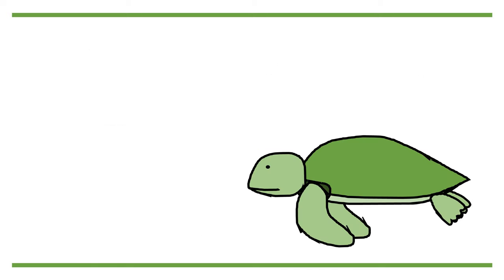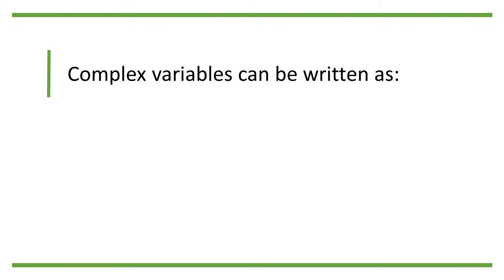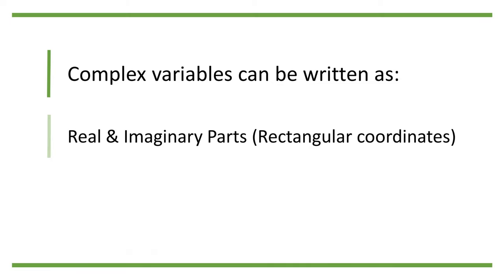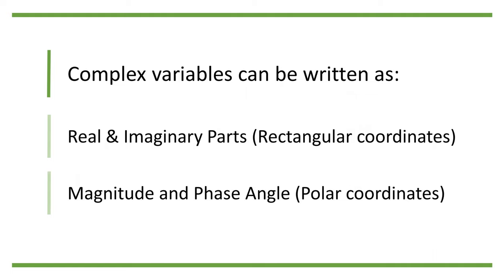We also need to remember that S and V are complex variables, and a complex variable contains two parts of information. In rectangular coordinates, the information is stored in the real and imaginary parts of the variable. In polar coordinates, it is stored in the magnitude and phase angle of the variable.